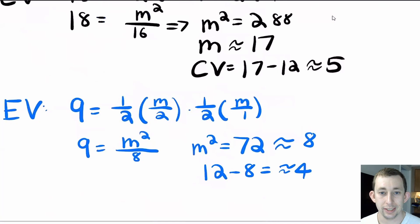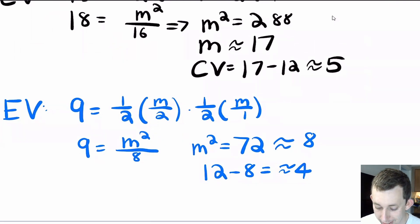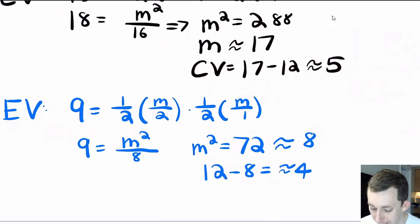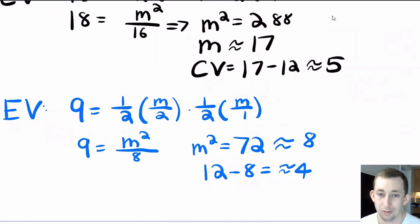Similarly, for equivalent variation I'm trying to get to utility √9 using the old prices: 9 = (1/2 × M / 2) × (1/2 × M / 1), where 2 is the old price of Pepsi and 1 is the old price of Coke. Solving for M gives roughly 8. The difference between the $12 he has and the $8 he'd need is roughly $4 — so the equivalent variation is roughly $4.